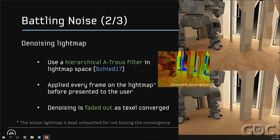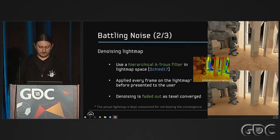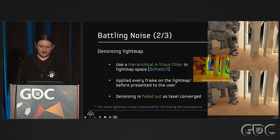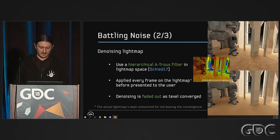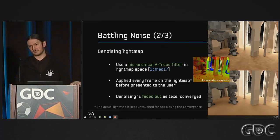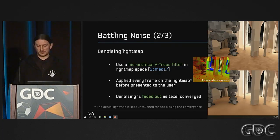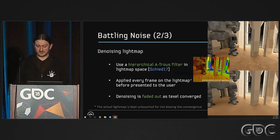We also use the variance to denoise the light map, using the same filter used for SVGF. On the right at the top you can see unfiltered light maps — very noisy — and at the bottom the filtered light map using the SVGF filter. The small image in the middle shows variance: red is very high variance and blue means it has converged. This is applied on the light map each frame before it's presented in the editor.